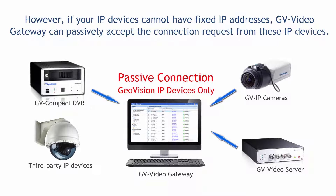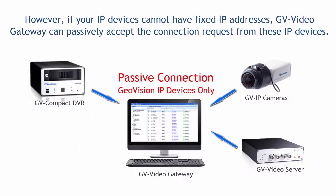However, if your IP devices cannot have fixed IP addresses, GV Video Gateway can passively accept the connection request from these IP devices. Passive connection is only supported by GeoVision IP devices.